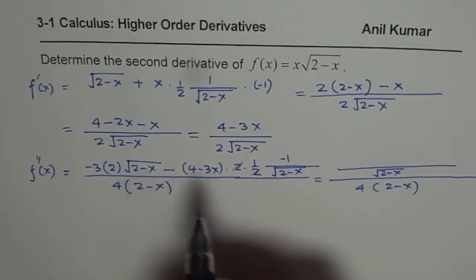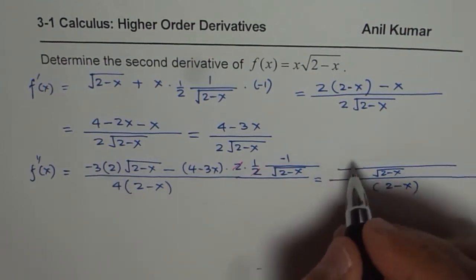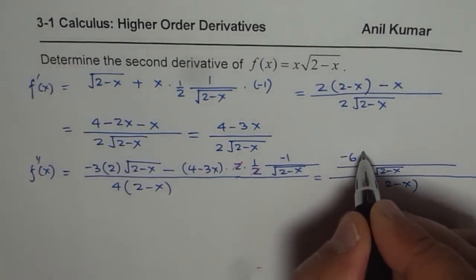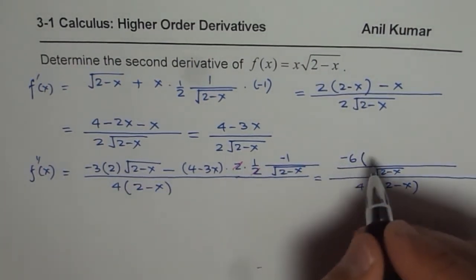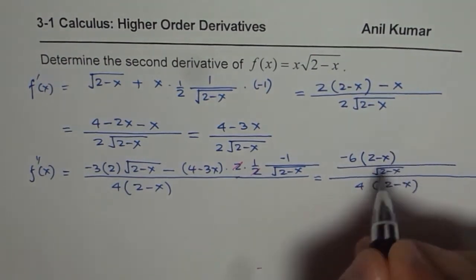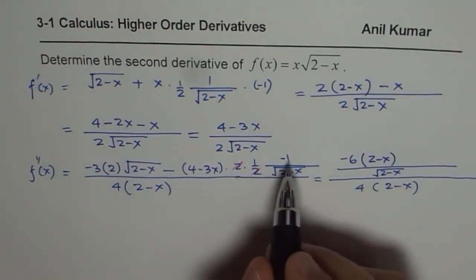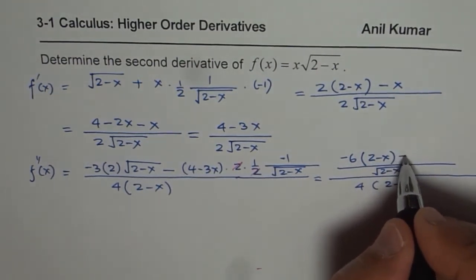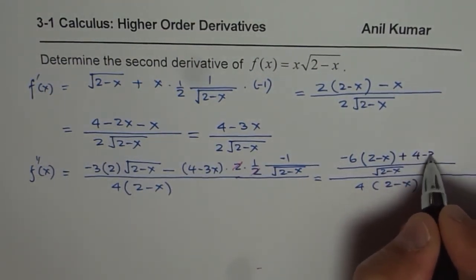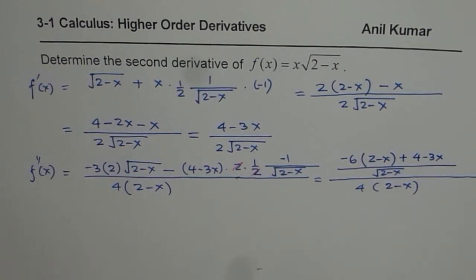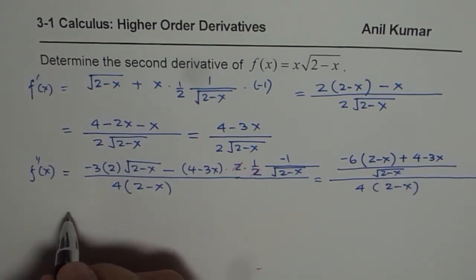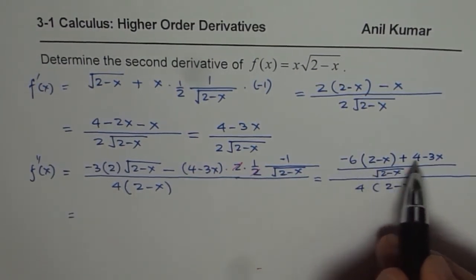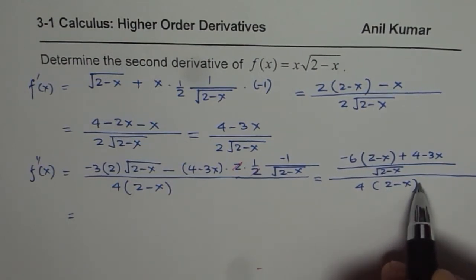It gets multiplied here which is minus 6, so we get minus 6 times 2 minus x. And what remains here is minus 1 times all that, so it becomes plus 4 minus 3x. So that is how you need to simplify and then we will simplify the numerator, bring this to the denominator.